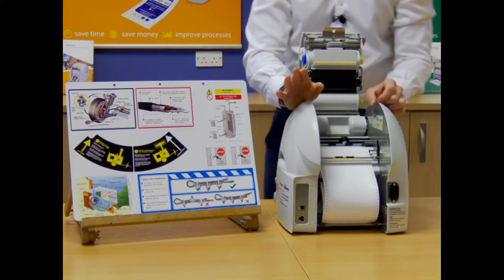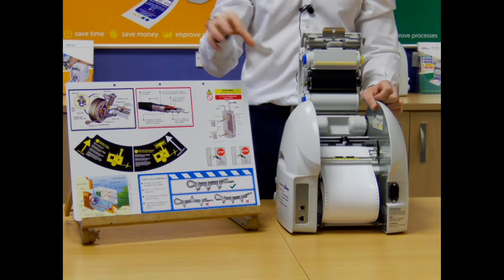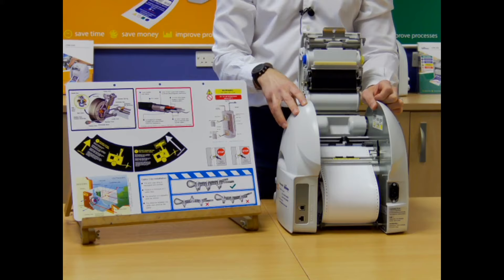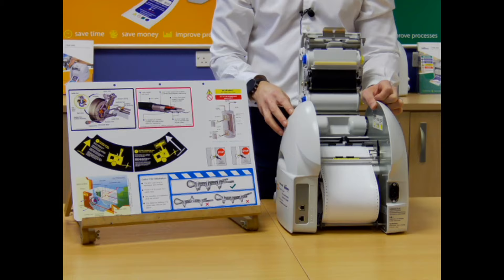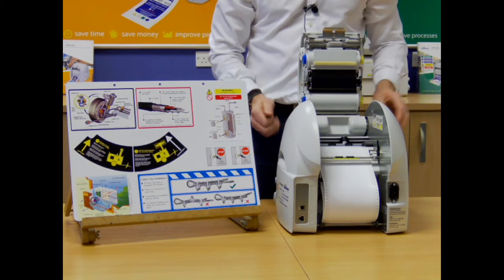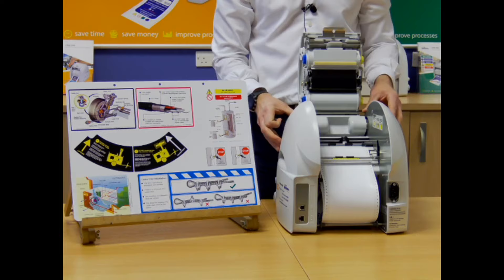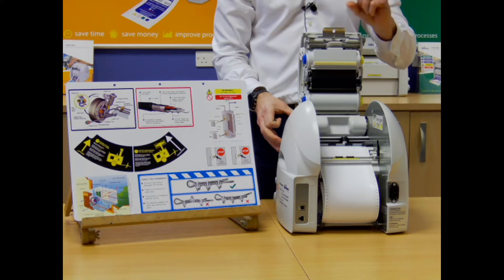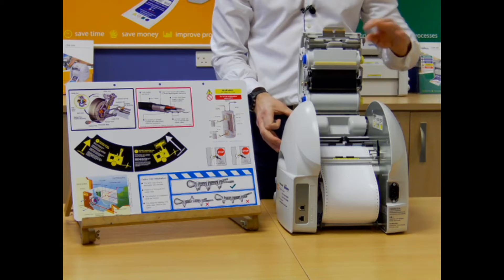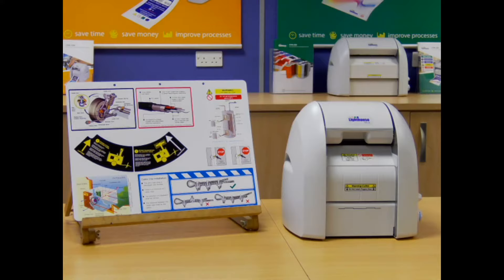On the back here you've got things like USB. You've got a network port as well. This system, slightly different to the 200 DPI system, you can actually network the software and you can actually network the printer. It just means you can use it on various PCs. So what I'll do is I'll hand over to James, and then he can go through the software.